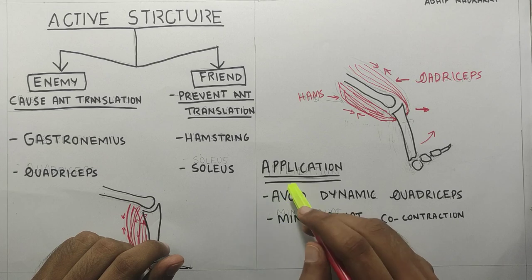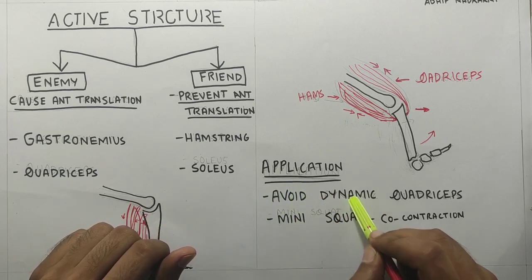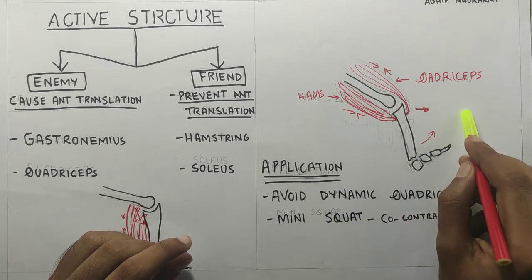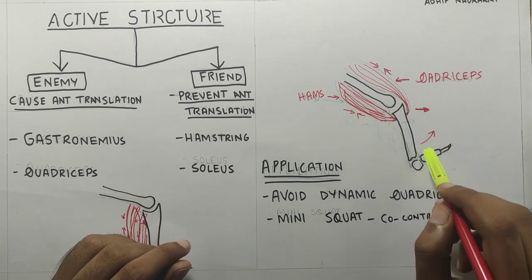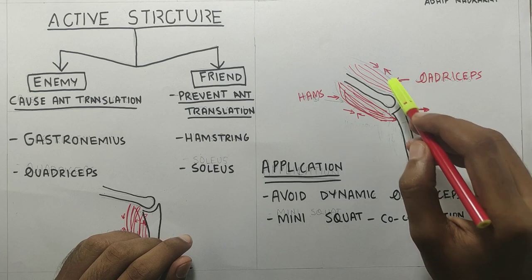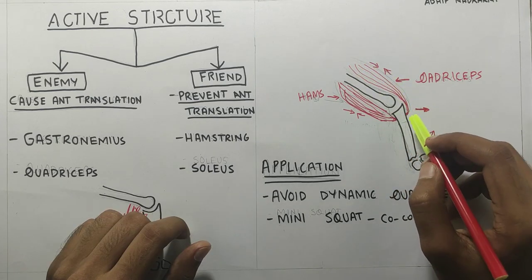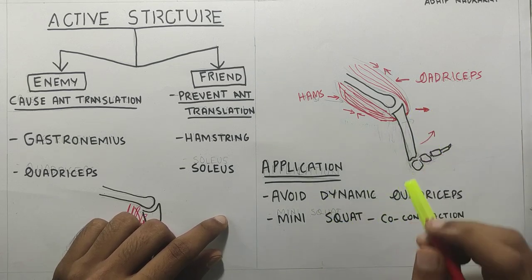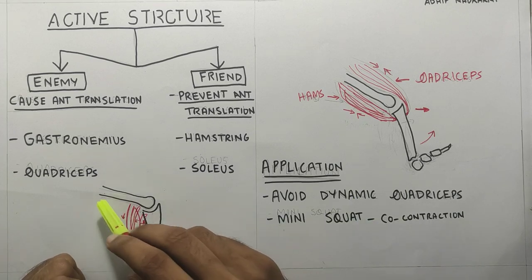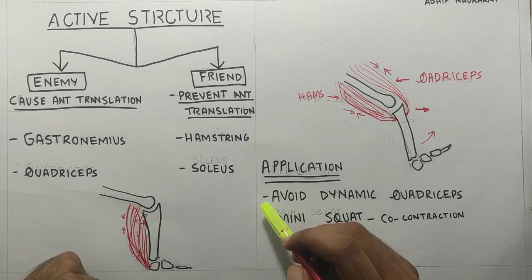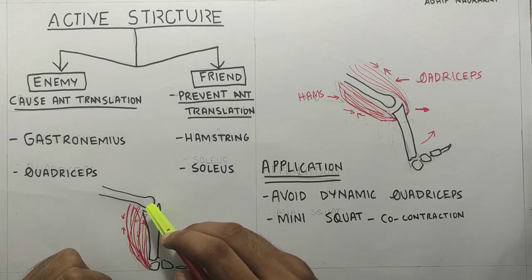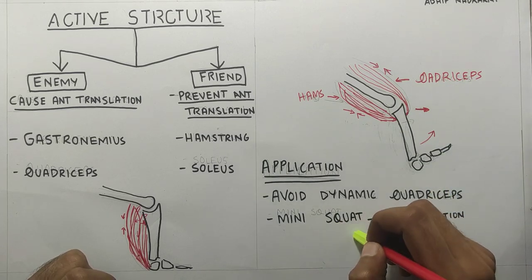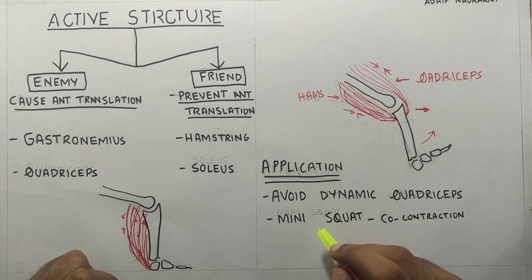In the clinic, when we start off with rehabilitation we should always avoid dynamic quadriceps exercises — that is when the patient is in a sitting position and takes his foot up. Why? Because in sitting there will be quadriceps contraction which will put a lot of stress on the ACL as it causes anterior translation of the tibia. The second application would be mini squats — going up to 90 degrees or less than 90 degrees of flexion. Even though there is quadriceps contraction in squats, we still give mini squats to an ACL patient while avoiding dynamic quadriceps exercises.